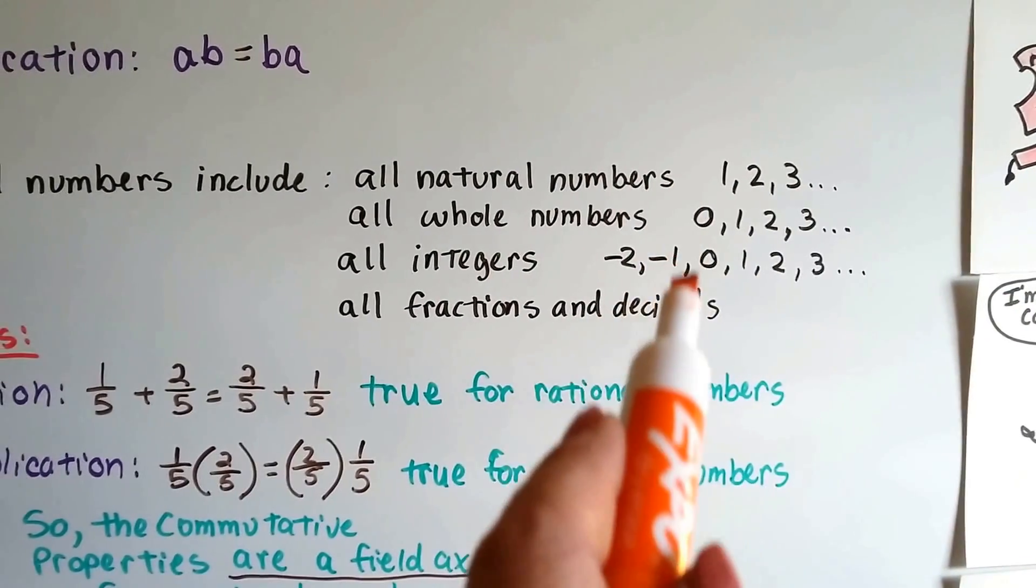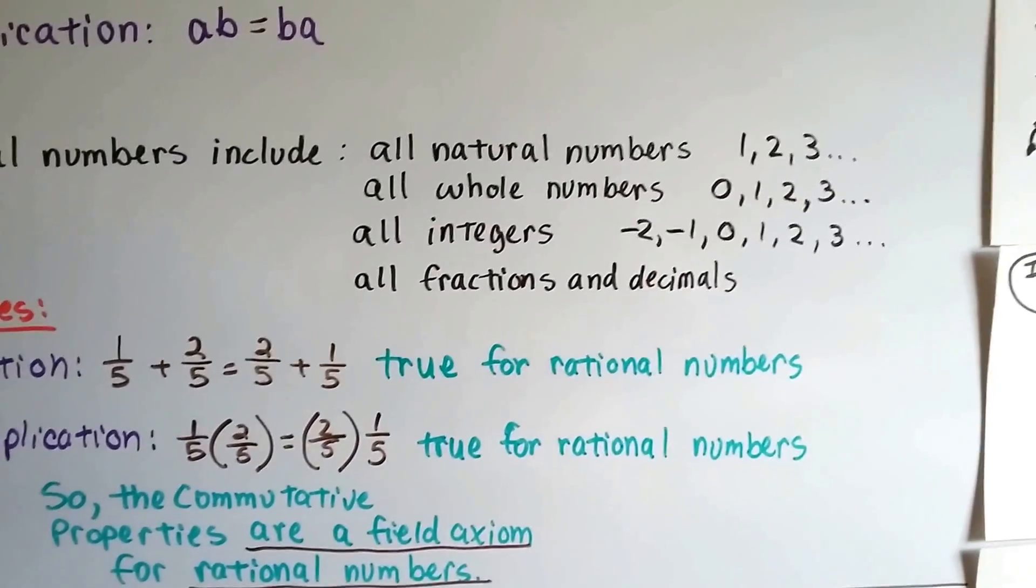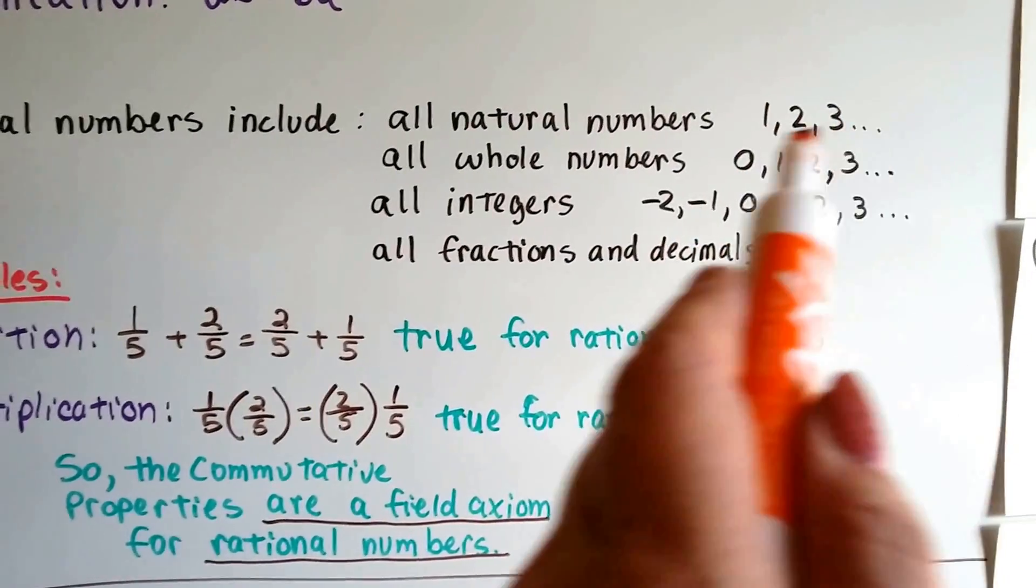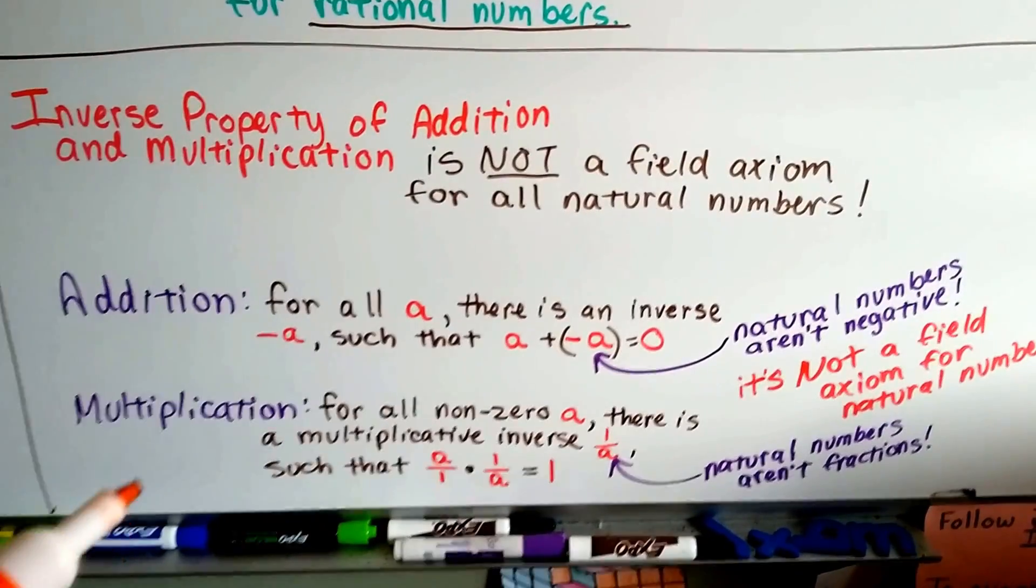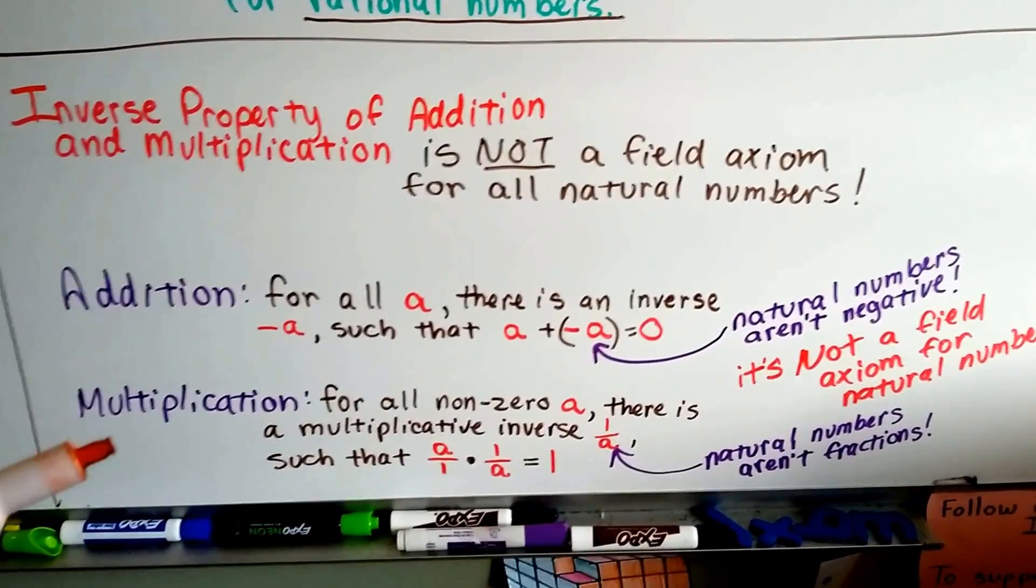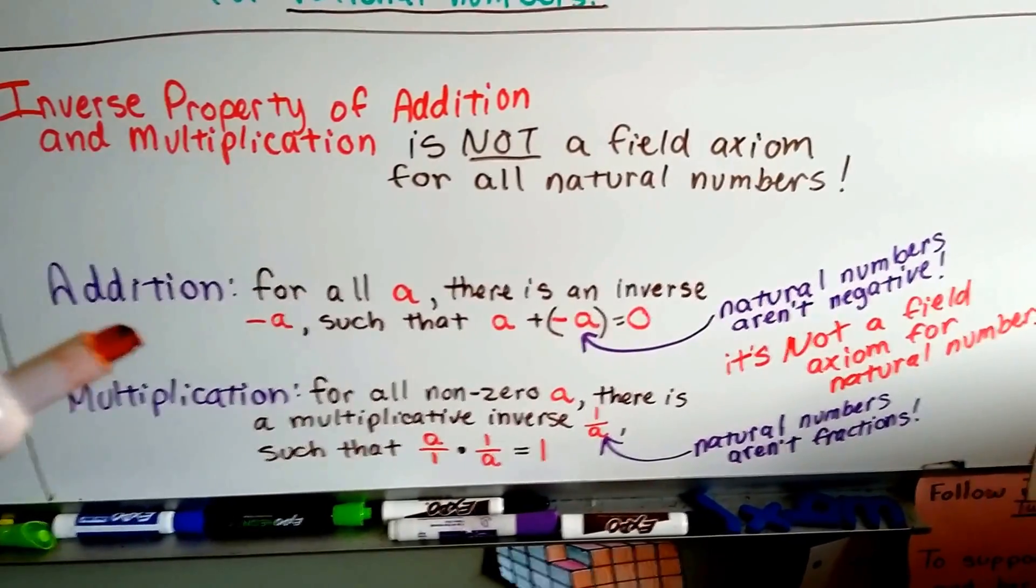But it doesn't have any negatives. It doesn't even have zero. It doesn't have any fractions or decimals. It's only these counting numbers without a zero. So the inverse property of addition and multiplication is not a field axiom for the natural numbers because let's take a look at addition.